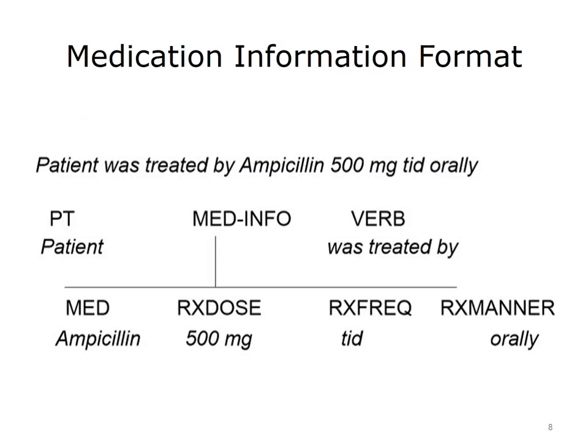This slide shows an example for one of the information formats. The medication information format is one of the simpler ones. The original text in the clinical document was: 'patient was treated by ampicillin 500 mg TID orally.' The medication information format has slots for the patient, the medication, the dose, the frequency, the manner in which it was given, and the verb. The text of the sentence mapped into those slots and gives a complete picture of one medication used by this patient.